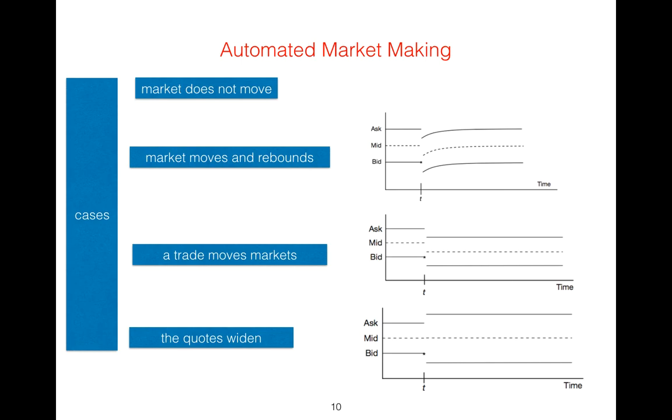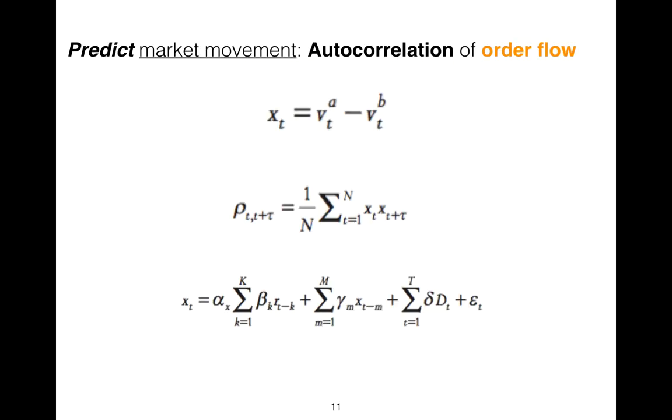As you see in this graph, it rebounds to the previous prices. The third case is a trade moves the market, so you see there is an offset. The last case is the queues widen. We predict market movement using order flow.